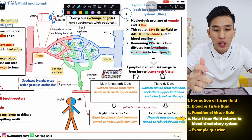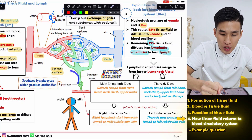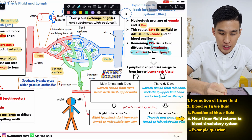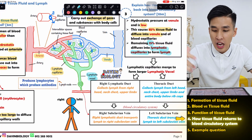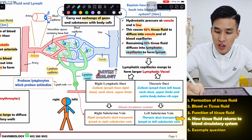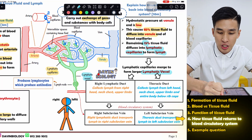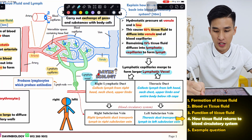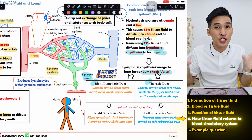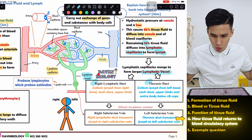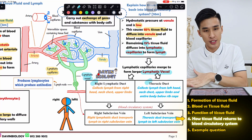From there, your lymphatic capillaries will merge into a lymphatic vessel, and this lymphatic vessel will eventually connect to two major lymphatic vessels — like many small rivers merging into two large rivers. These two are the right lymphatic duct and the thoracic duct.